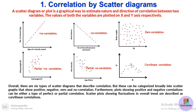In the sixth type of scatter diagram, values first increase and then decrease, so this does not follow a linear relationship. Unlike the first four graphs which fall under linear correlation, this is a non-linear correlation, also known as curvilinear correlation.